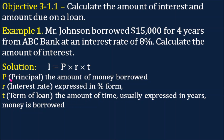P means principal — the amount of money borrowed. R stands for interest rate, expressed in percent form. And T stands for term of loan, or the amount of time usually expressed in years, that money is borrowed.